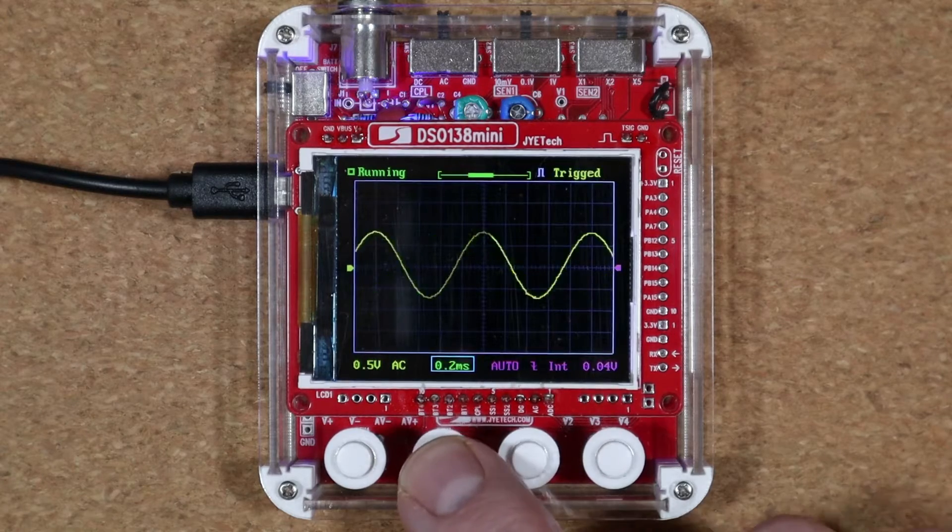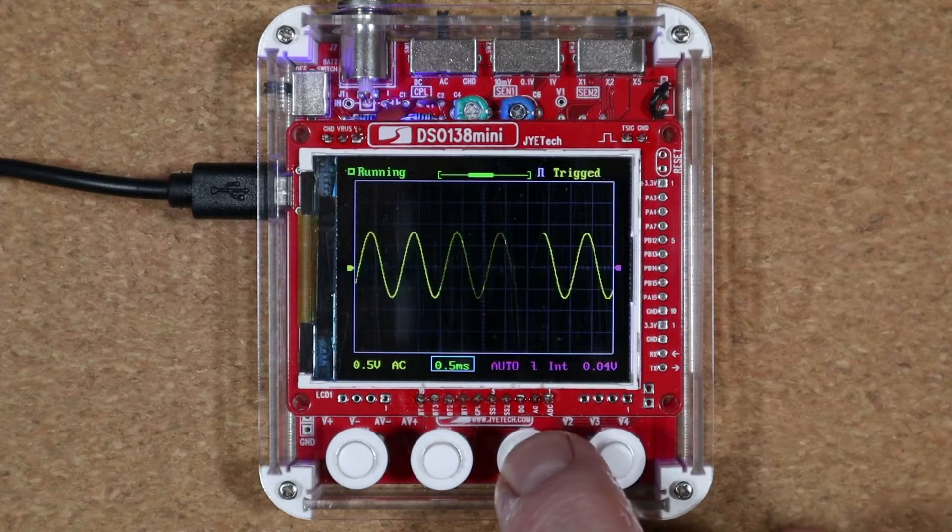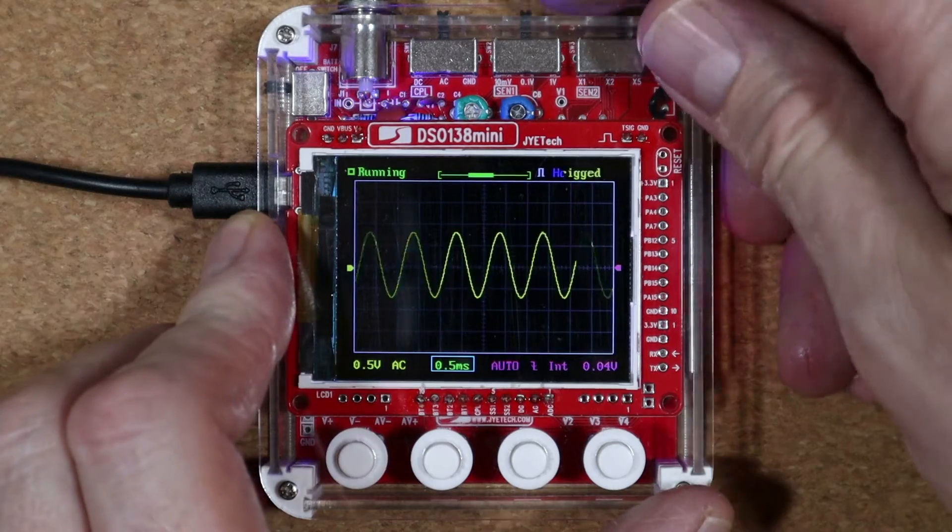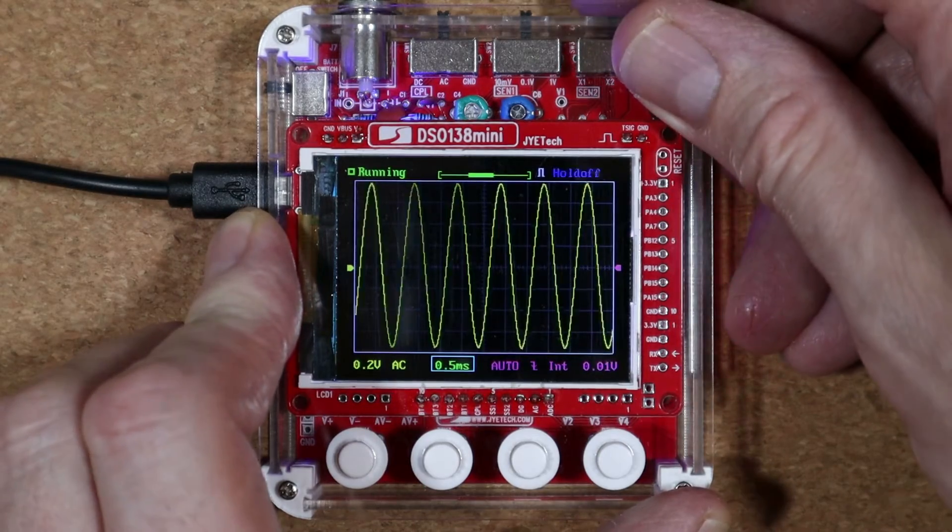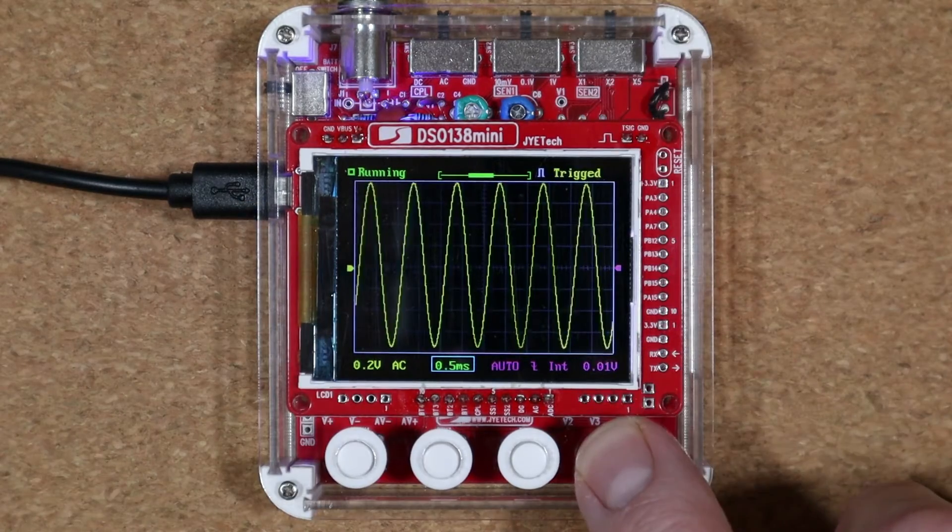Now the oscilloscope's bandwidth is only 100 kilohertz, so you'll start to see distortion in the signal as you approach frequencies that high. For the uses I've put it to, that's not been an issue.